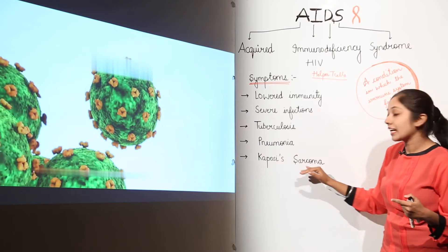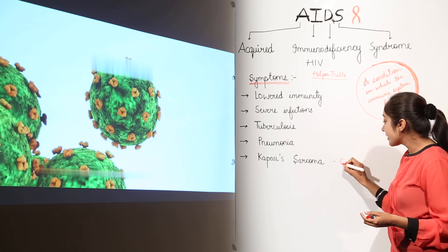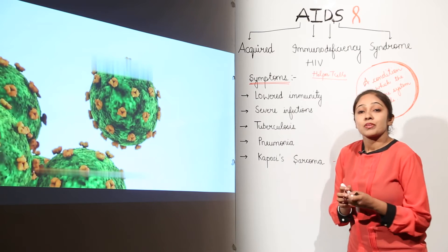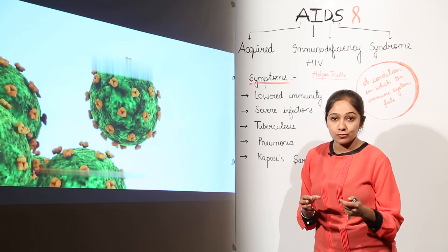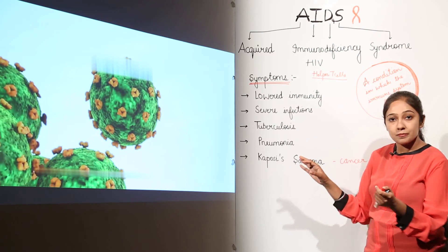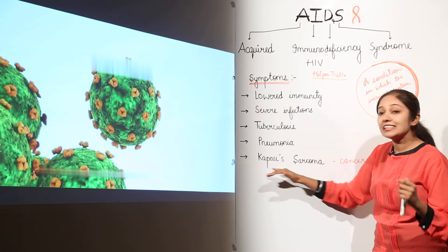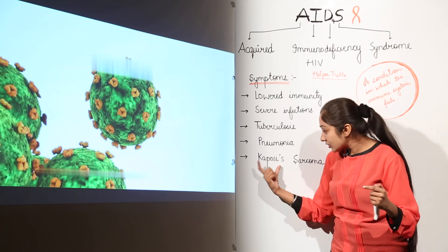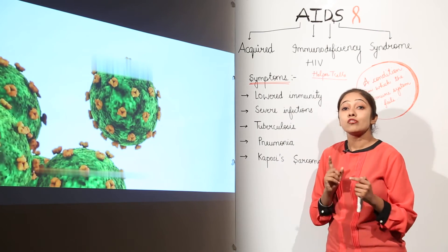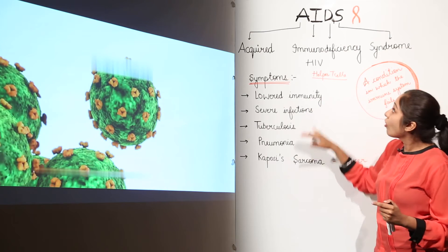Another symptom is Kaposi's sarcoma, which is actually a type of cancer found in the blood vessel walls of your body. The visible signs of this symptom are pinkish to reddish spots on your body. Remember that Kaposi's sarcoma is a type of cancer in the blood vessel walls. These are a few symptoms of AIDS — Acquired Immunodeficiency Syndrome.